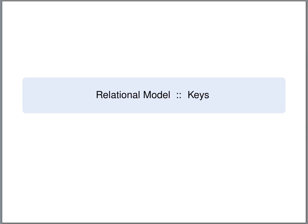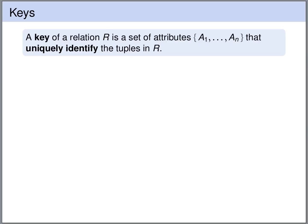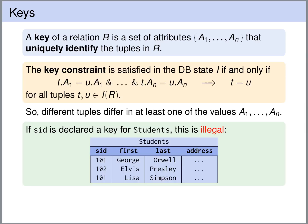Keys are a central concept of relational databases. A key of a relation R is a set of attributes a1 up to an that uniquely identify the tuples in R. Formally, the key constraint is satisfied in database state i if and only if for all tuples t and u of the instance of R: if t and u agree on all attribute values a1 through an, then t and u must be the same tuple.